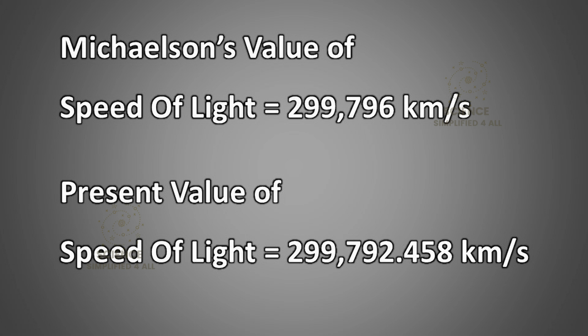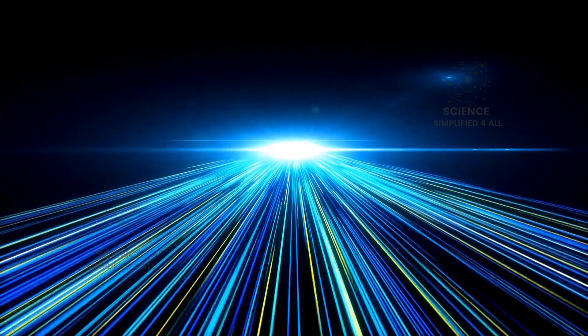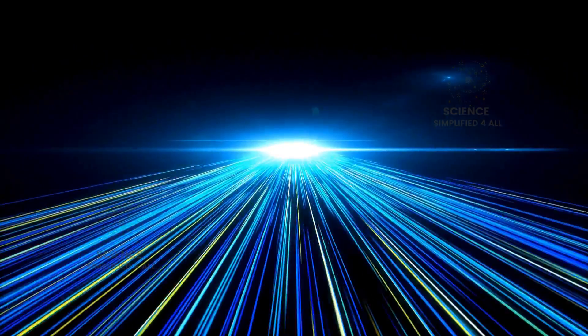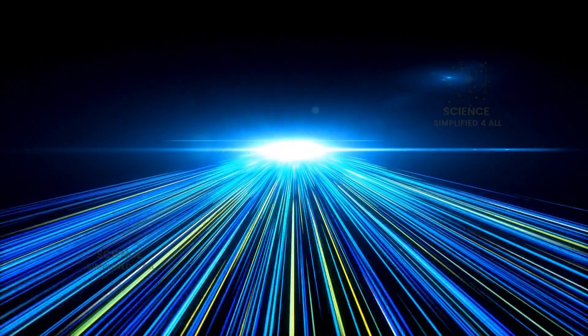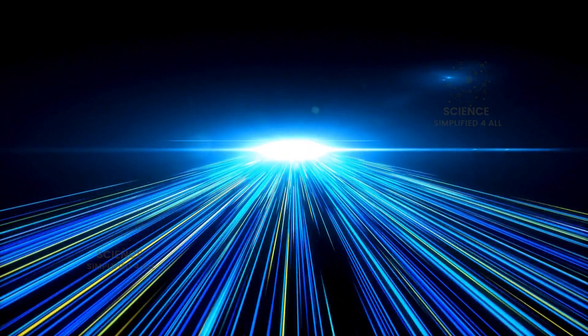Compared to the presently accepted value of the speed of light, which is 299,792.458 kilometers per second, Michelson's measurement of 299,796 kilometers per second was remarkably accurate. The difference is just 4 kilometers per second, a truly incredible achievement, especially considering this was measured almost 100 years ago. In summary, the speed of light, approximately 300,000 kilometers per second, is not just a theoretical assumption, but a measured and verified value obtained through precise experiments.